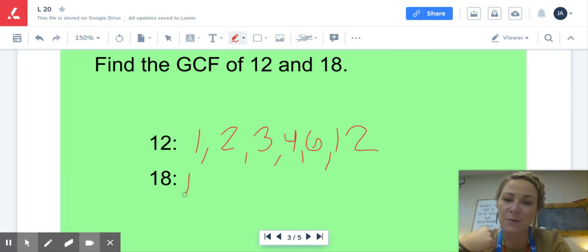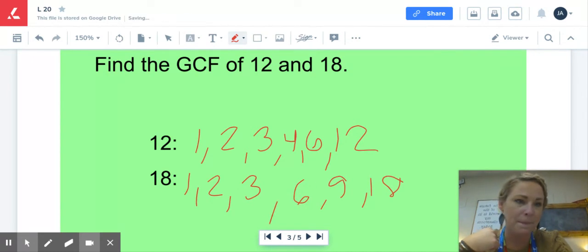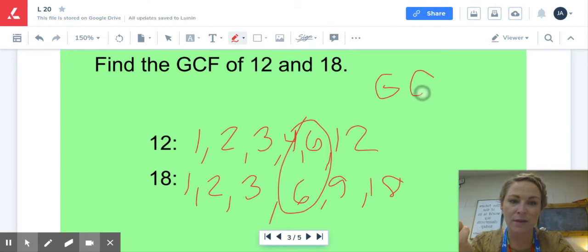The factors of 18. We have one and 18. Oh, I'm sorry. This handwriting is terrible. We have two and nine, three and six. Four, five. No, that's it. Okay, so those are my factors. Looking for the greatest common factor that they have. We have six. The GCF of these two is six.